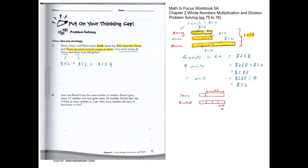Question 2 of problem solving. Rachel and John have the same number of marbles to start. Rachel gives away 10 marbles and John gives away 22 marbles. After that, Rachel has three times as many marbles as John. From the picture, what remains for Rachel is three times what remains for John.